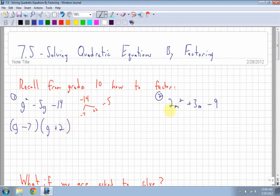If there is a number, like question 2 here, if there is a number in front of the m squared, first thing you want to see, can I factor that 2 out of everything? No, I can't, because 3 and 9 don't have a 2 as a common factor.